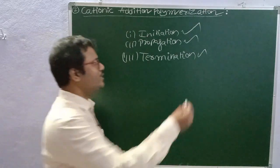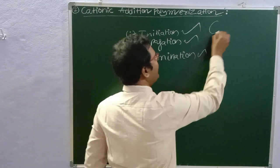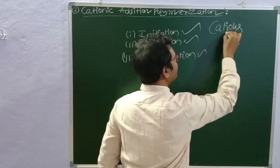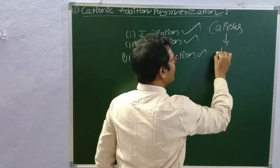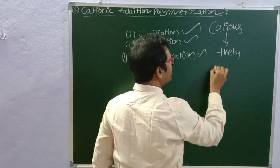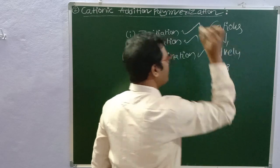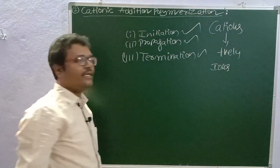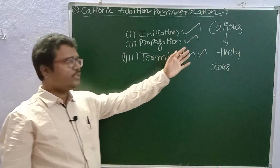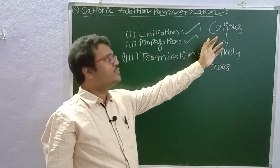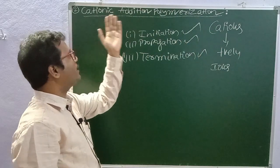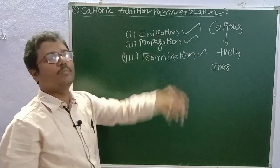Cationic addition polymerization will be started by cations, that means positively charged ions. So the polymerization that is started by cations is called as cationic addition polymerization.